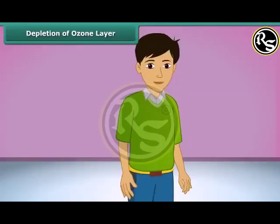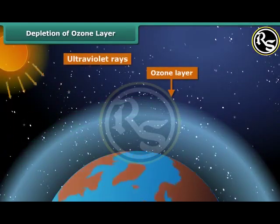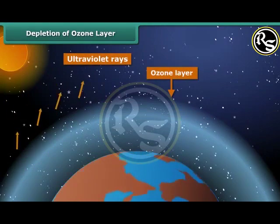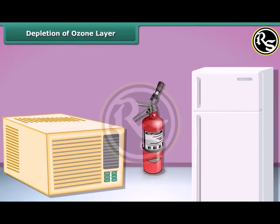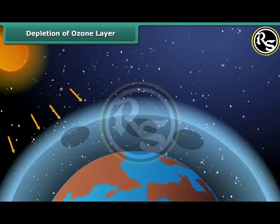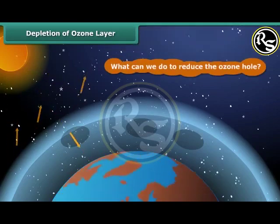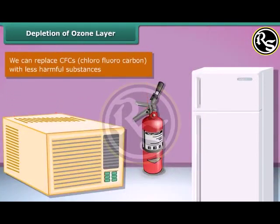Let us learn about the ozone layer. It is a layer of ozone gas in the upper atmosphere of Earth. Its role is to protect us from the harmful ultraviolet rays of the sun. Things like air conditioners, refrigerators, and fire extinguishers release chlorofluorocarbons, CFCs, into the atmosphere and create holes in the ozone layer. To reduce the ozone hole, we can replace CFCs with less harmful substances to save the ozone layer from depletion.